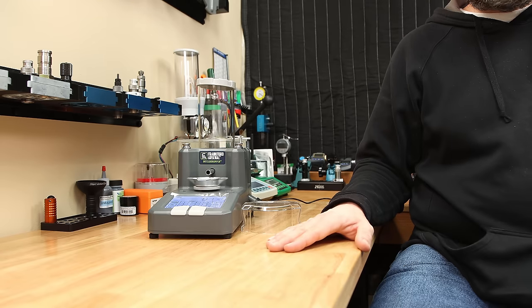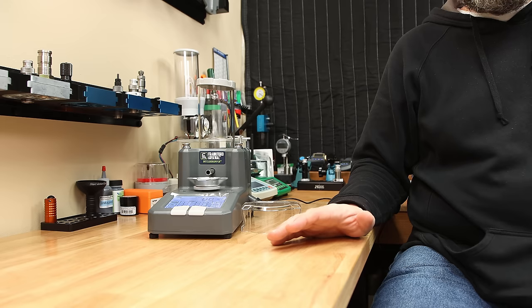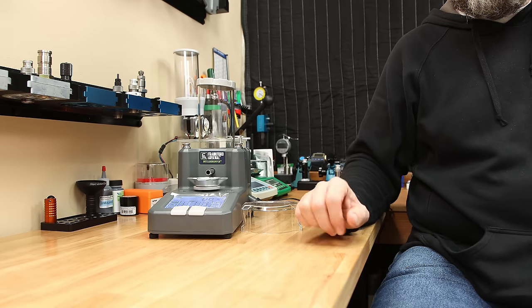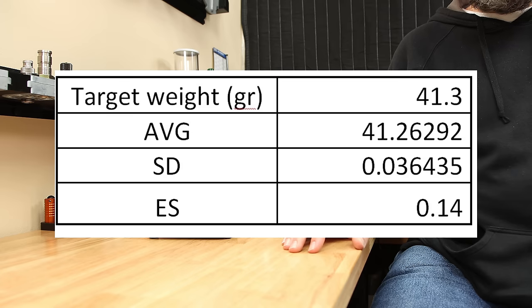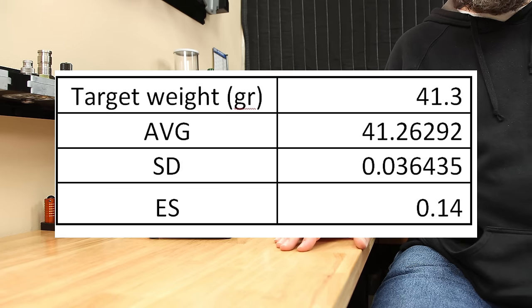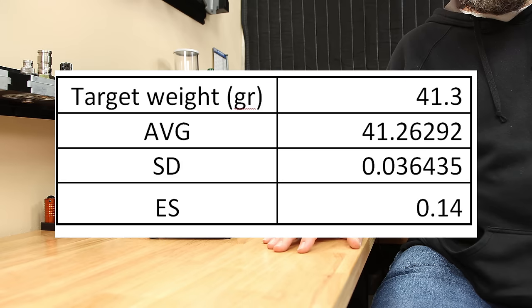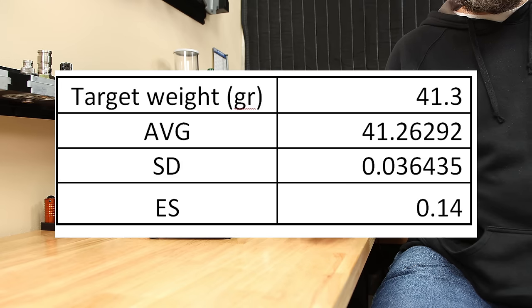But what about H4350? My experience with H4350 was similar. 48 total dispensed charges experienced the same two overcharges. With a target weight of 41.3 grains, the results were as follows. The average dispensed weight was 41.26 grains of powder. The standard deviation was about identical at 0.036 grains. The extreme spread across all 48 charges was 0.14 grains, so just a little bit better.